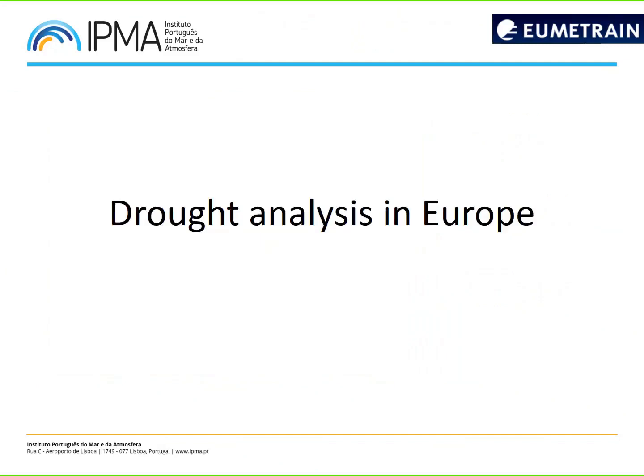This forest fire situation is clearly related to the severe drought we have been experiencing in Europe. To finish, I will show a couple of satellite products you can use to analyze drought. This is the land surface temperature anomaly product — for all-sky conditions, so there are no missing values due to clouds, providing a homogeneous image.